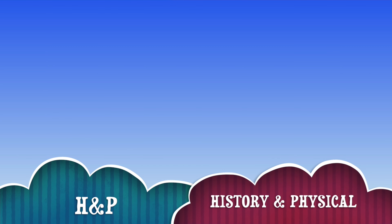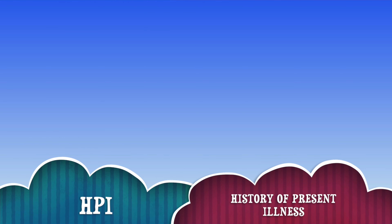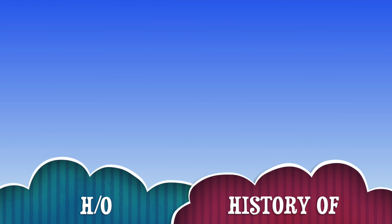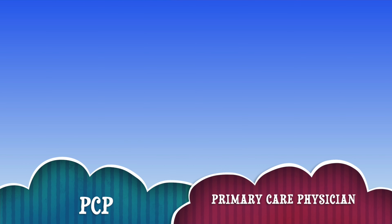The next abbreviation is H&P, which stands for History and Physical. The next is HPI, meaning History of Present Illness. And H/O simply means History Of.